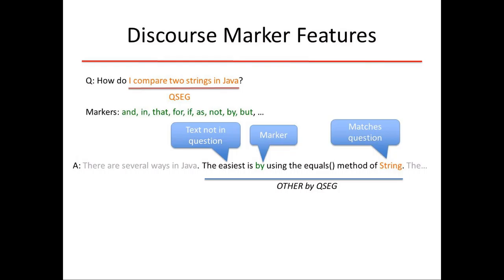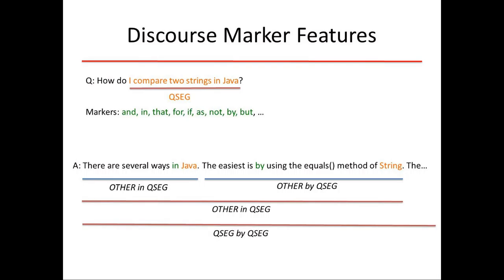These features can be done within a sentence or cross-sentence. For same-sentence features, a segment is labeled OTHER or QSEG depending on whether it matches the question. Going cross-sentence, you might get OTHER-by-QSEG or QSEG-by-QSEG, generating trigrams. The marker is in the middle and the labels are on either side. Very simple — nothing fancy here.